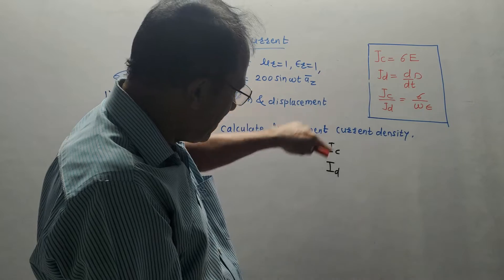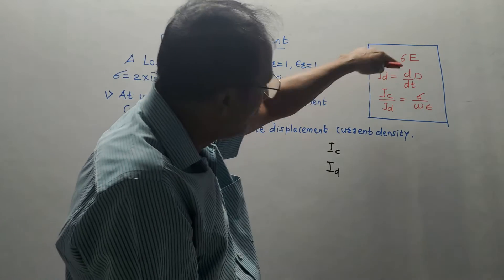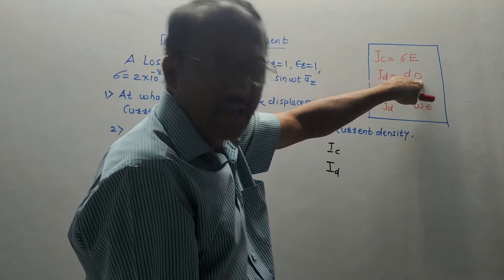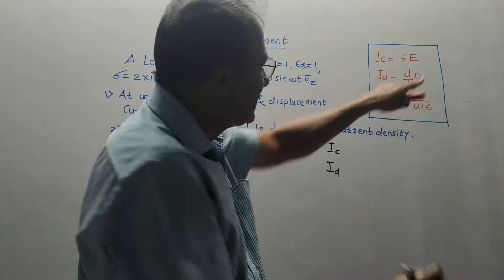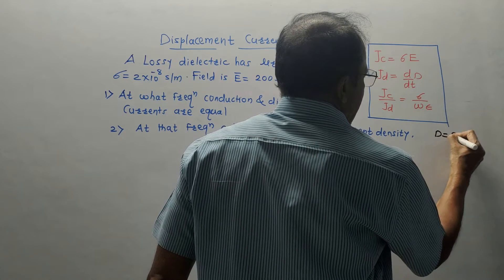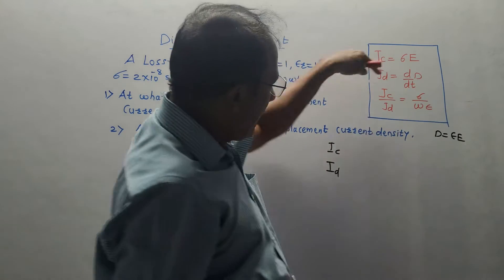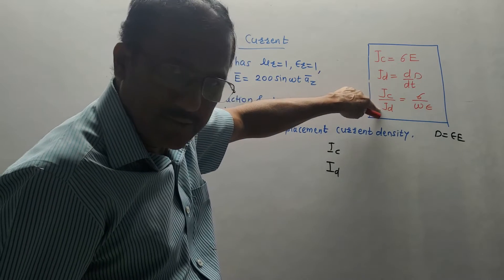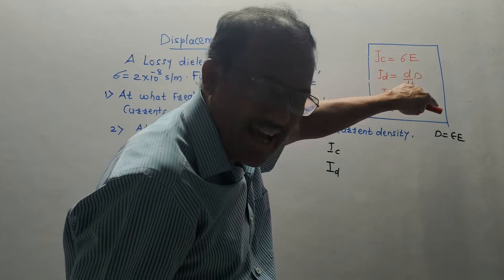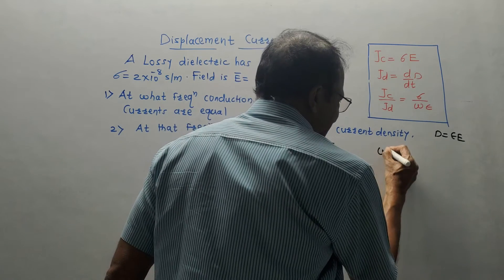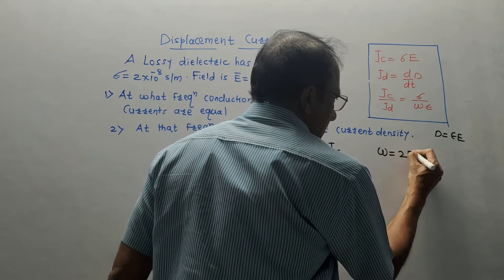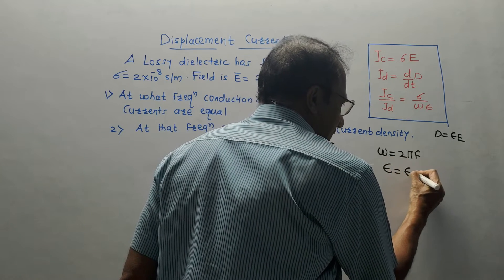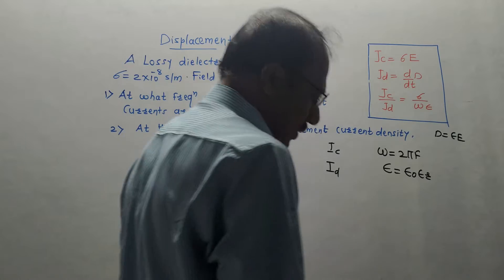JD is the displacement current density of ID, which is the derivative d/dt of D, where capital D is electric flux density. We know the basic formula D equals epsilon times E. The ratio of JC to JD, that is conduction current to displacement current, is given by sigma upon omega epsilon, where omega is angular frequency expressed as 2πf, and epsilon is permittivity given by epsilon_0 times epsilon_r.